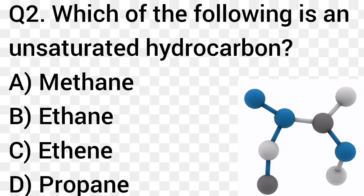Question number 2. Which of the following is an unsaturated hydrocarbon? Option A: Methane. Option B: Ethane. Option C: Ethene. Option D: Propane. The right answer is option C, Ethene.